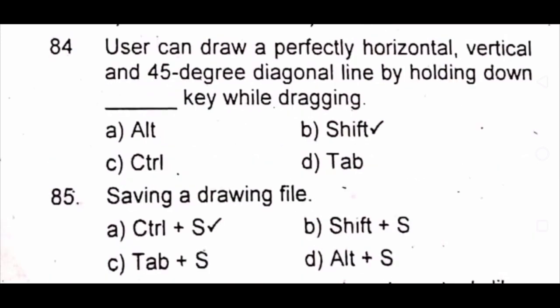Question 84: A user can draw a perfectly horizontal, vertical and 45-degree diagonal line by holding down dash key while dragging. A) Alt B) Shift C) Ctrl D) Tab. The answer is B) Shift. Question 85: Saving a drawing file. A) Ctrl+S B) Shift+S C) Tab+S D) Alt+S. The answer is A) Ctrl+S.